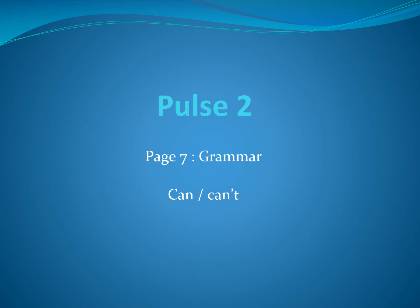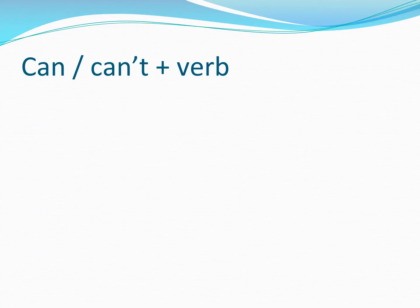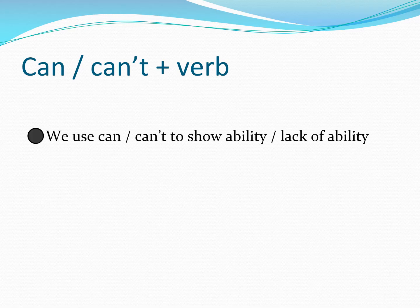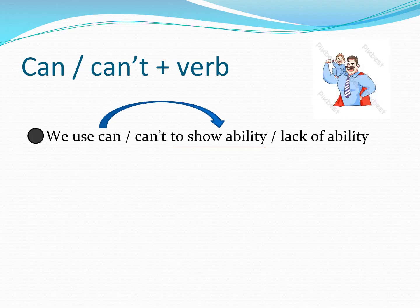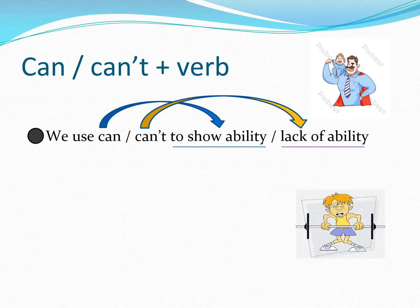Can or can't plus verb. We use can't as the abbreviation for the word cannot. Can't means cannot. We use can to show ability. For example: My father can carry my younger brother easily. We use can't or cannot to show lack of ability.